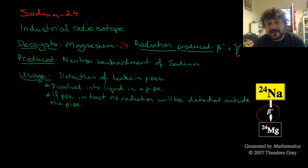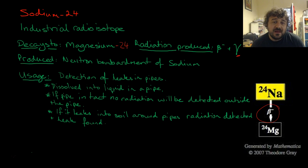If the pipe is intact, there'll be no detected radiation outside of the pipe. However, if it leaks into the soil in pipes, this means we know that there's a leak. The water or the oil is leaving the pipe and entering the environment around it. So we've detected a leak.